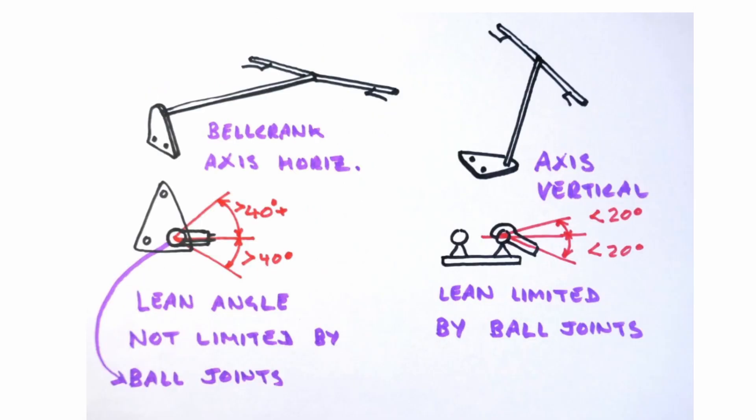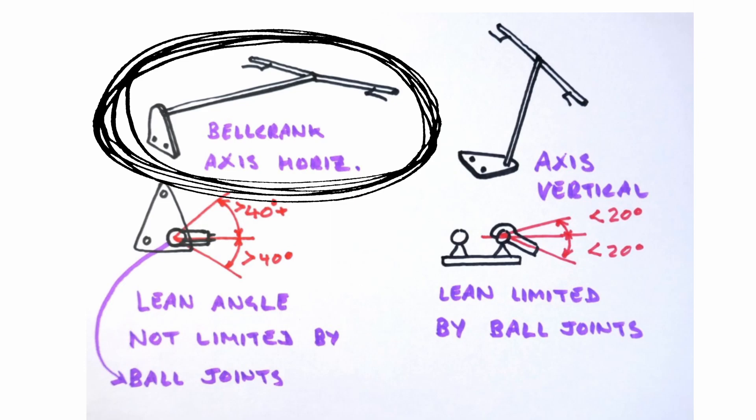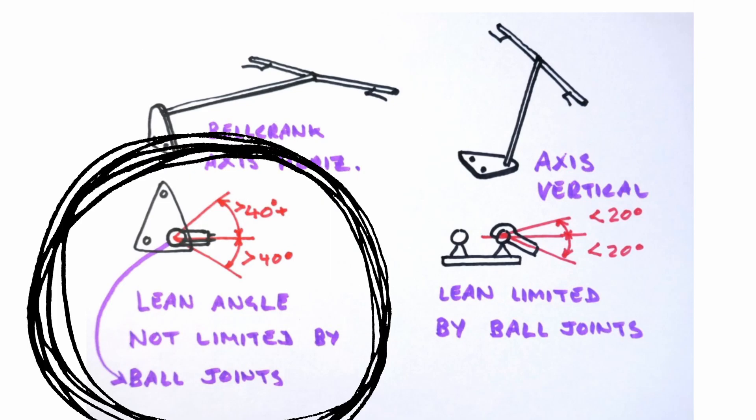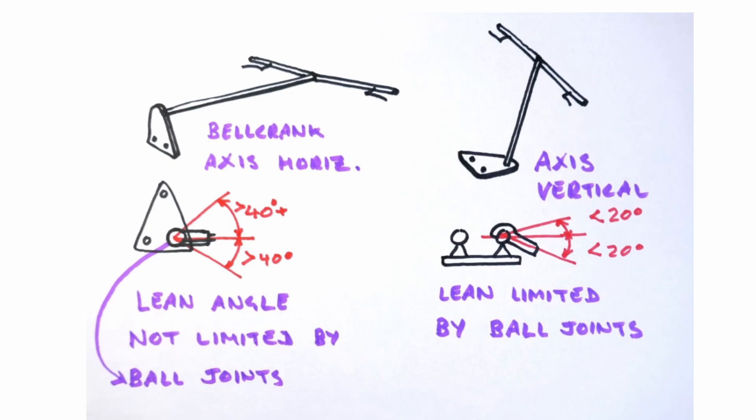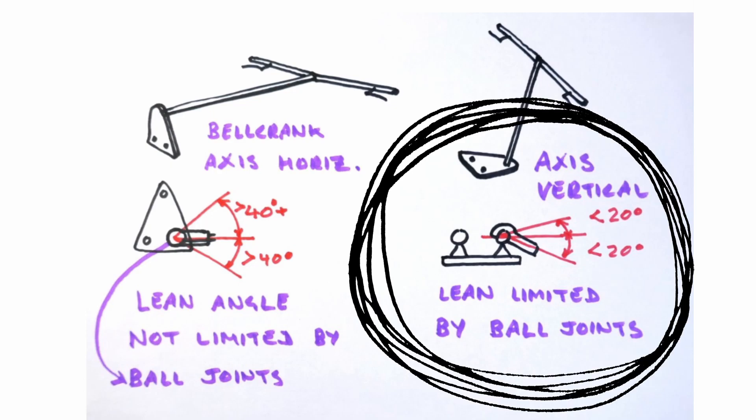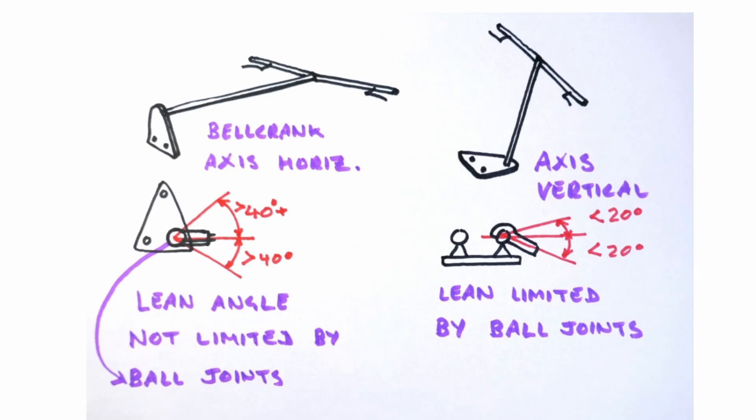This is a good time to point out that positioning the bell crank with its pivot axis close to horizontal means that the ball joints do not limit the maximum angle of lean. Ball joints can have a fairly limited angle of operation, generally quite a bit less than we need for the tilting action. This constraint will affect the attachment arrangements for the outer end of the track rod too, by the way.